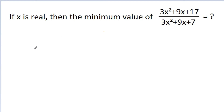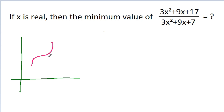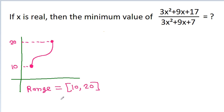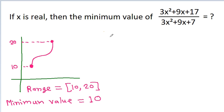Before starting the solution, consider a concept: if a function has a range from 10 to 20 — a closed interval from 10 to 20 — then the minimum value will be equal to 10.